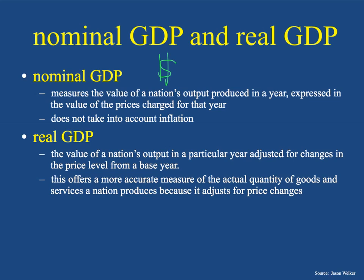The thing is, throughout time, the price of certain things is going to go up. So a Honda Accord in 1985 cost roughly $10,000. That same car right now in the United States, a Honda Accord, costs $30,000. Does that mean that people now are paying three times the price? Yeah, but is it three times the value? No. So nominal GDP would just be the price of it in that given year without taking into account inflation, which is the average price level rising.